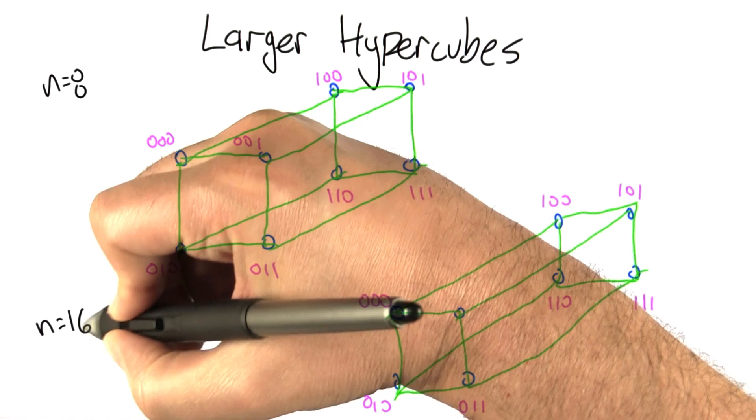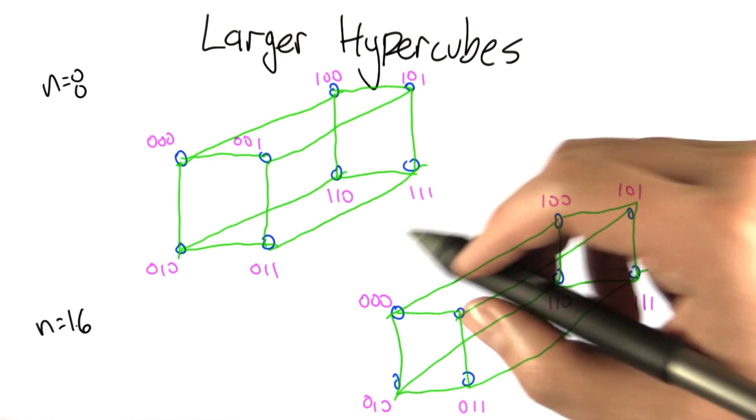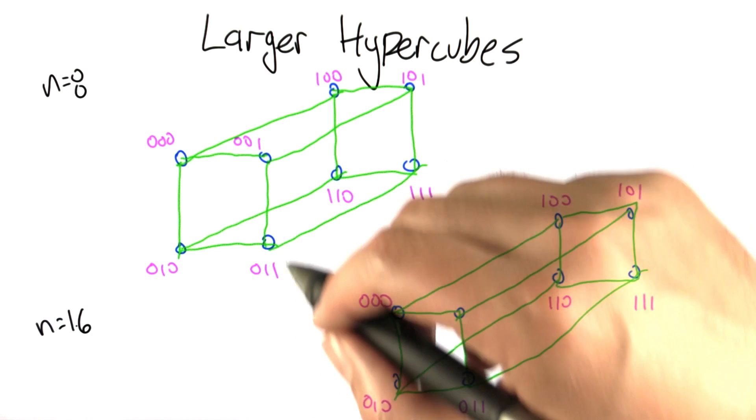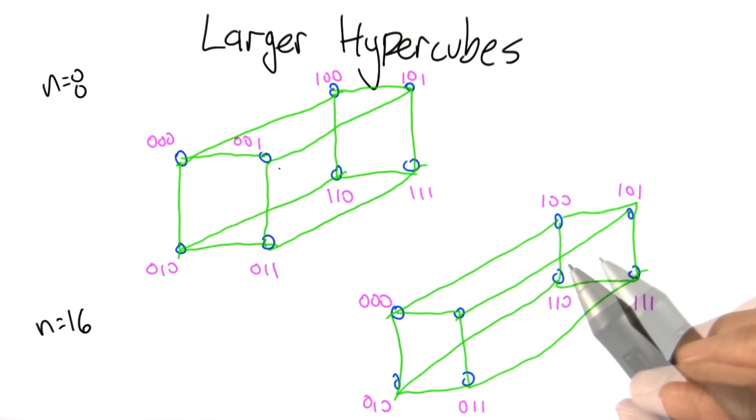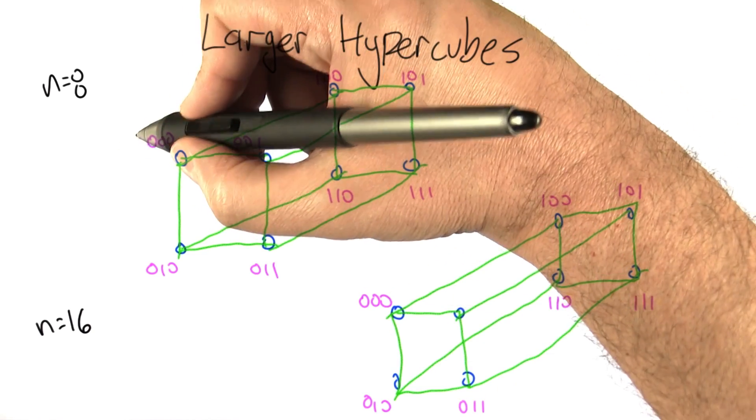To generate the hypercube for n equals 16, we can do this with a very interesting little trick. What we're going to do is take two hypercubes of size 8 and 8. Now 8 and 8 is going to be 16. Let's look at what we can do. We can leave these bit patterns the way that they are and then extend them.